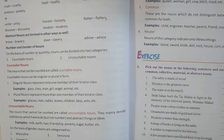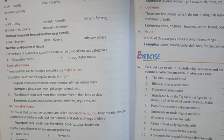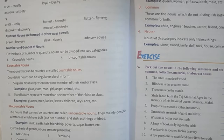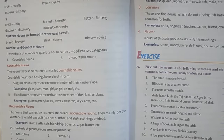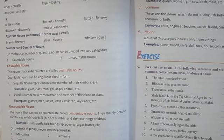For example, pencil — you can write 'pencil' or you can write 'pencils', so it can be both singular and plural form. Singular nouns represent only one member of a kind, for example: class, girl, woman, angel, animal, etc. Plural nouns represent more than one — two or more. For example: glass becomes glasses, girl becomes girls, back becomes backs, woman becomes women.